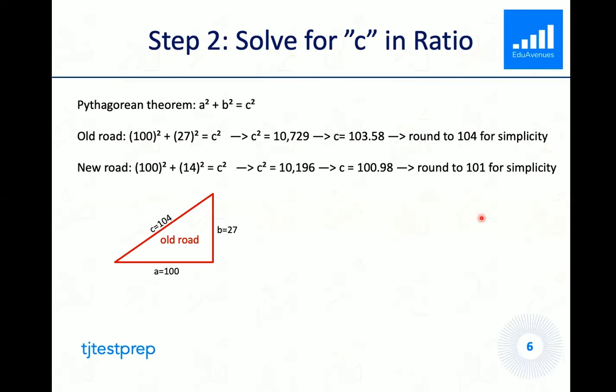For the length of the old road, the hypotenuse, we have 104. And for the new road, we have 101. Keep in mind that these are not the actual measurements. They are just written up in ratios.